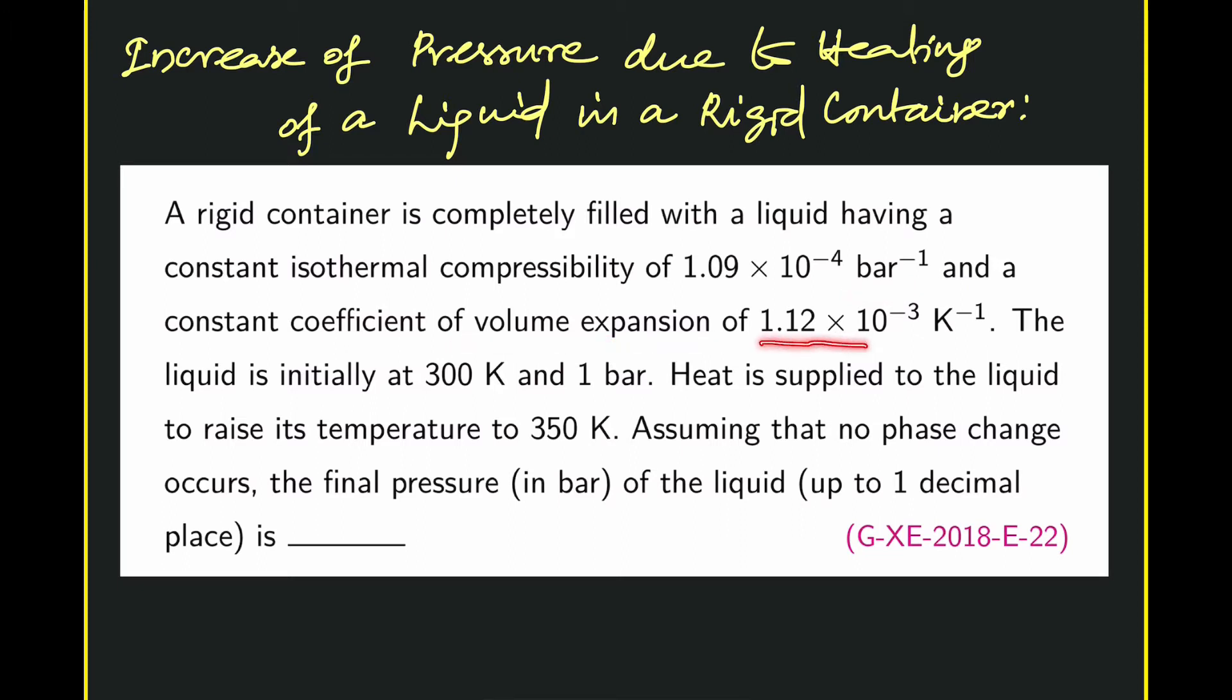1.12 × 10⁻³ K⁻¹. The liquid is initially at 300 K and 1 bar. Heat is supplied to the liquid to raise its temperature to 350 K. Assuming that no phase change occurs, the final pressure in bar of the liquid up to one decimal place is dash. This problem was asked in GATE Engineering Sciences in the year 2018.